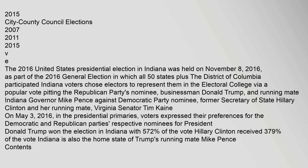and running mate Indiana Governor Mike Pence, against Democratic Party nominee former Secretary of State Hillary Clinton and her running mate Virginia Senator Tim Kaine. On May 3, 2016, in the presidential primaries, voters expressed their preferences for the Democratic and Republican parties' respective nominees for President. Donald Trump won the election in Indiana with 57.2% of the vote; Hillary Clinton received 37.9% of the vote. Indiana is also the home state of Trump's running mate Mike Pence.